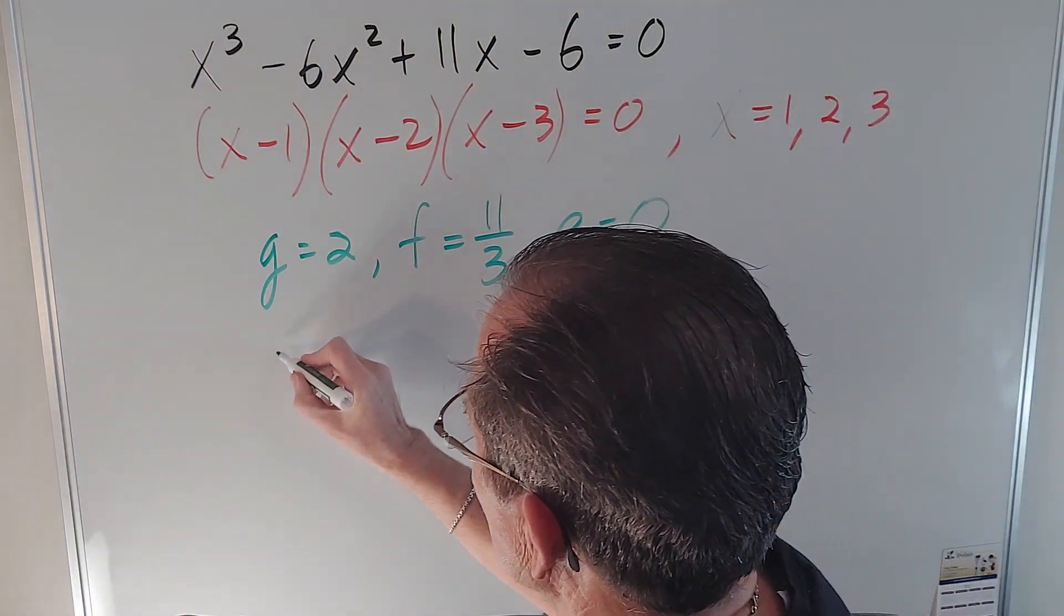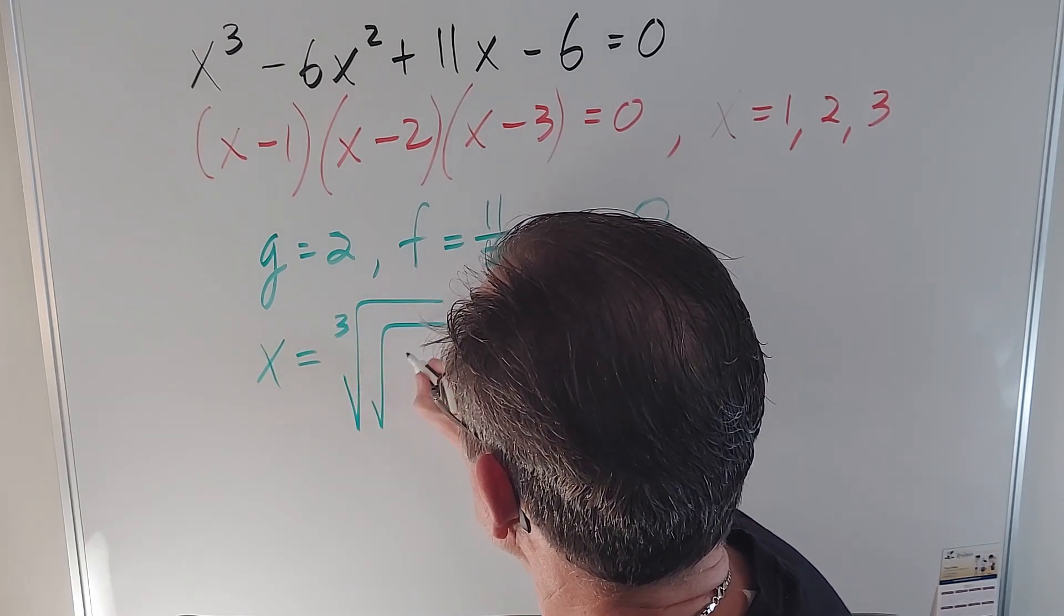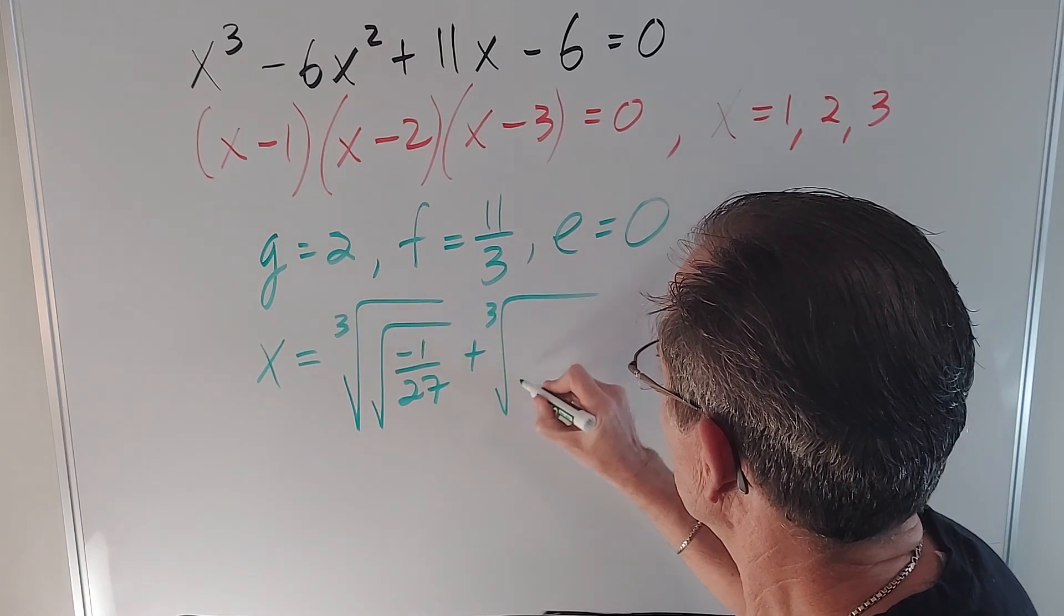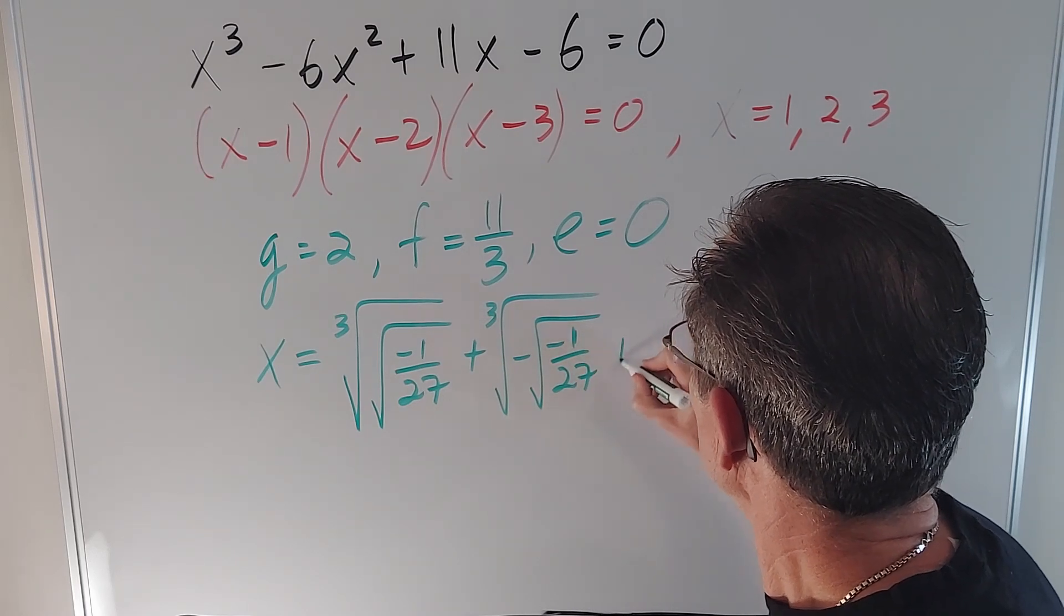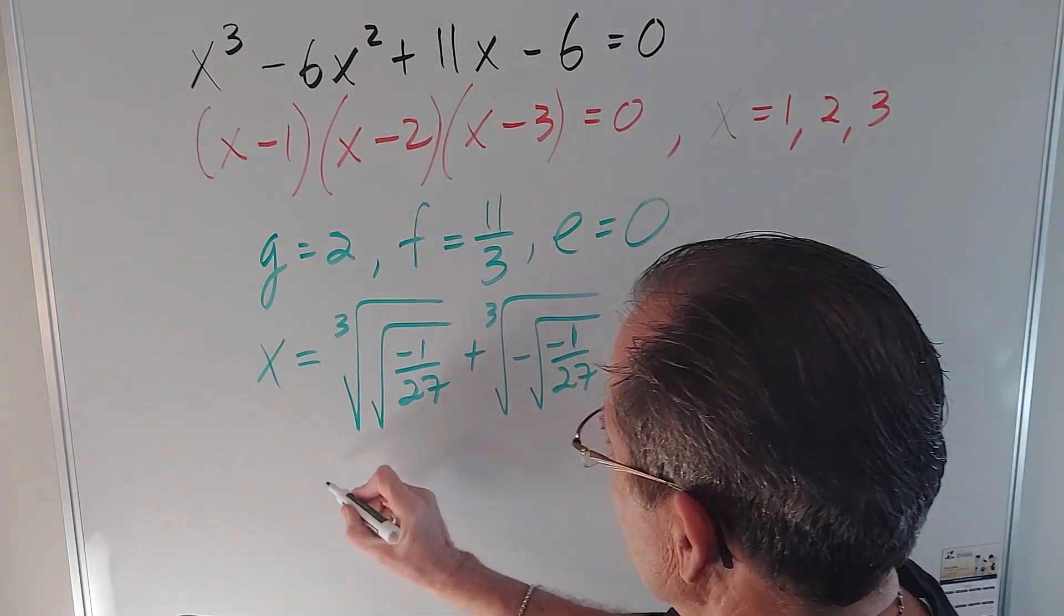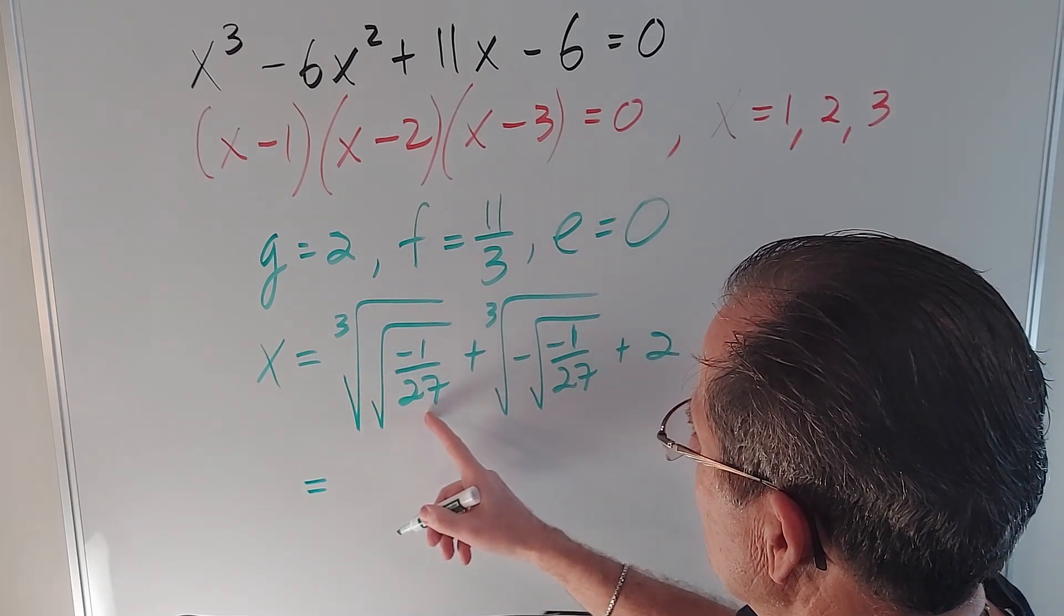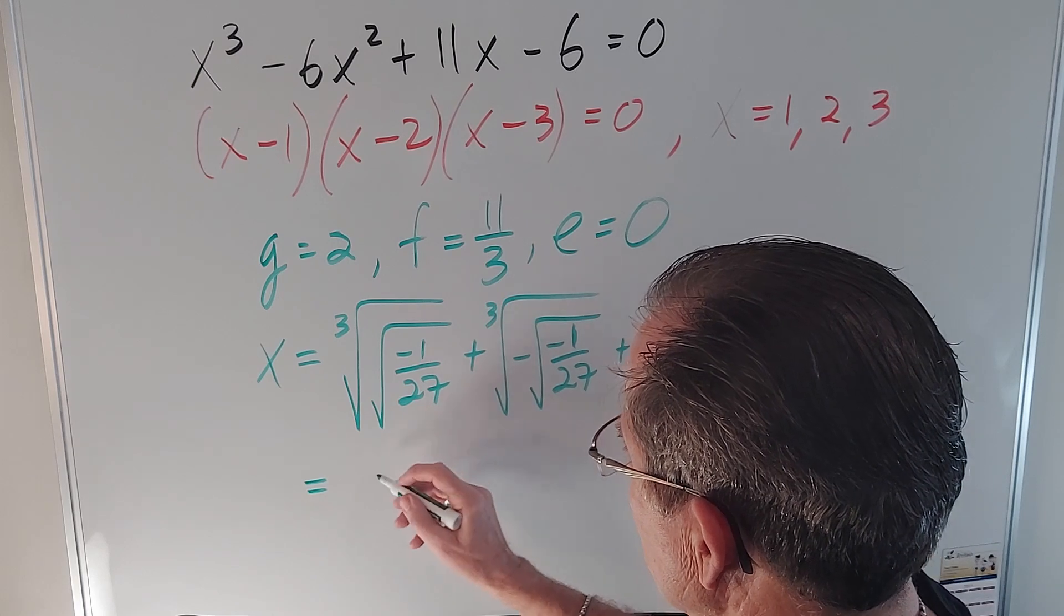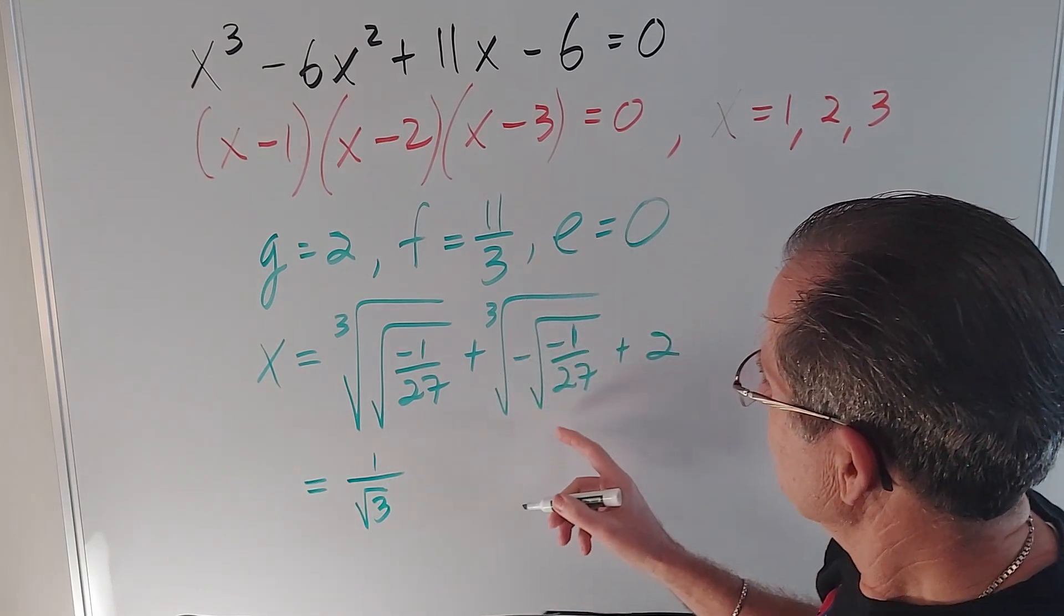So if I plug that into the cubic formula, I get x equals the cube root of the square root of negative 1 over 27 plus the cube root of the negative of negative 1 over 27 plus 2, which is going to turn out to be crucial. So what's this equal to? Let's do the cube root first. The cube root of 27 is 3, so the magnitude of that is 1 over root 3. Same with this one.